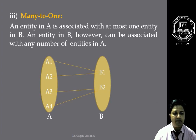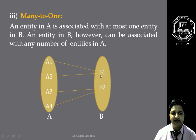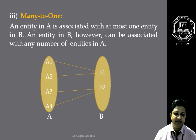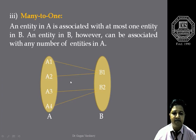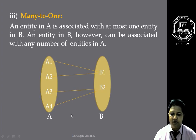Third is called many-to-one. An entity in entity set A is associated with at most one entity in entity set B — it is just the reverse of one-to-many. While an entity in entity set B can be associated with any number of entities in entity set A, as shown in the figure described below.